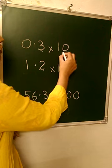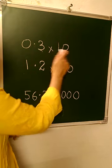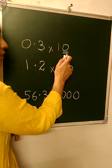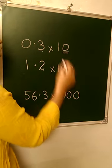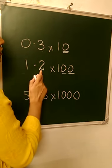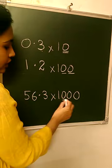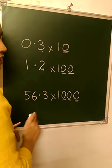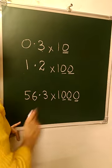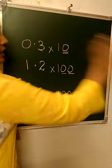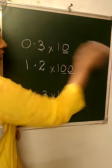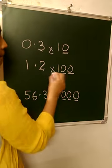If there is only one zero, the decimal shifts one place. Two zeros, decimal shifts two places. Three zeros, decimal shifts three places. Now which side shifting? Shifting towards the right side. The decimal shifts towards the right side when we are multiplying.